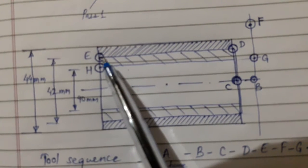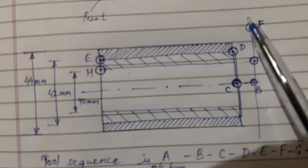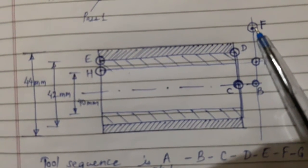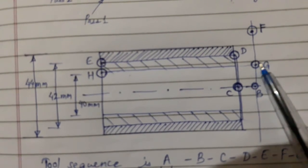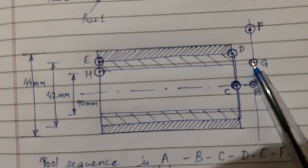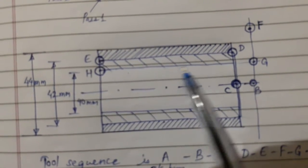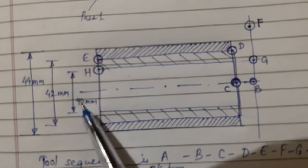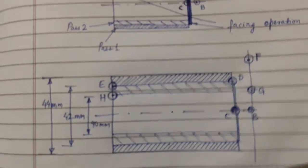Once the tool reaches E, it goes to position F, which is away from the job. Then it comes to position G, which is 2 mm away from the face, so the final pass can be done. From G it goes to H, removes the material, and the final diameter becomes 40 mm over the 70 mm length.